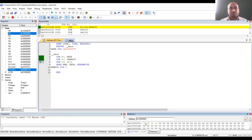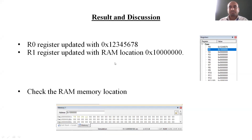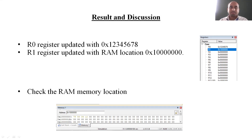This is the execution procedure and how we check the results. First, check the results in the registers. After that, verify whether the data is present in the RAM location by checking the memory. The R0 register is updated with 0x12345678 — the data we defined. The R1 register is updated with the RAM location 0x10000000. You can see the snapshot of the updated registers. Then check the contents in the RAM location, which you can find in the Memory window.